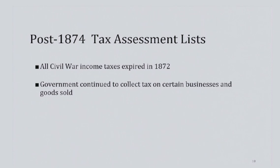While the income tax was allowed to expire in 1872, the government continued to collect taxes on certain businesses and goods sold, particularly liquor and tobacco. Therefore, the regional branches' holdings often include tax assessment lists into the 20th century.